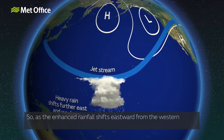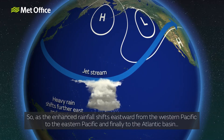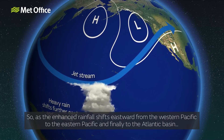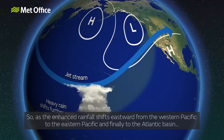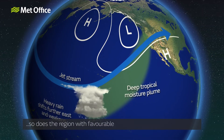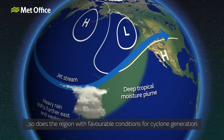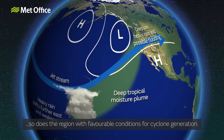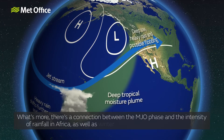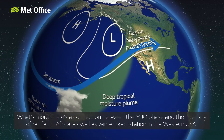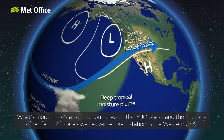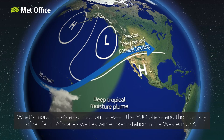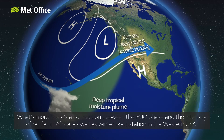As the enhanced rainfall shifts eastward from the western Pacific to the eastern Pacific and finally to the Atlantic Basin, so does the region with favourable conditions for cyclone generation. What's more, there is a connection between the MJO phase and the intensity of rainfall in Africa, as well as winter precipitation in the western USA.